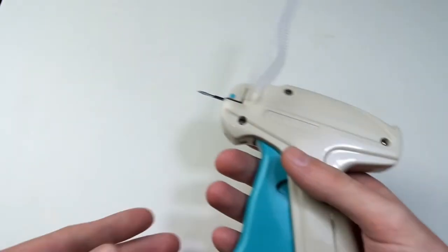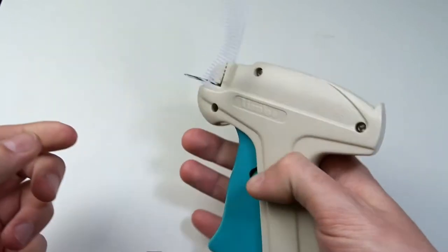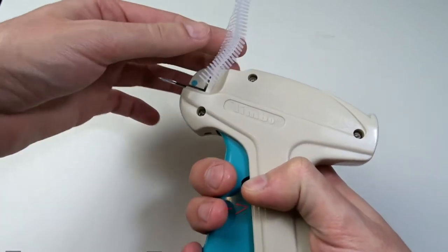To remove the fastener clip press the small green button, pull the trigger slightly and take out the fastener clip.